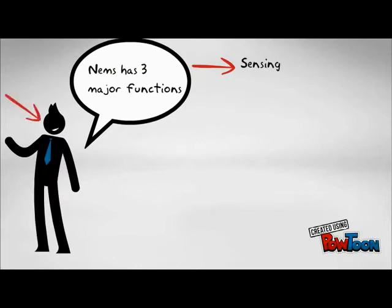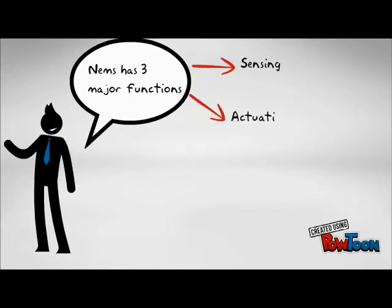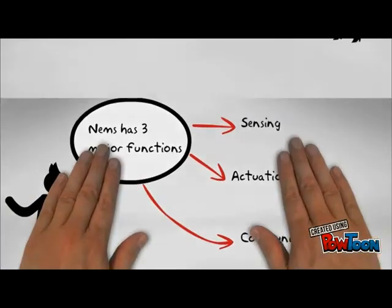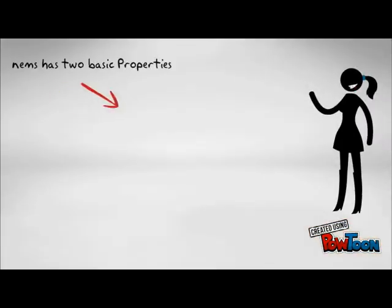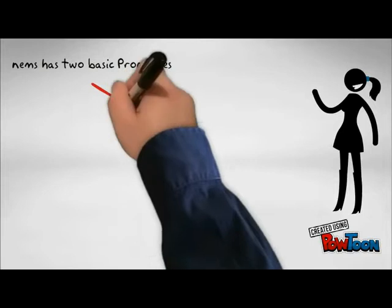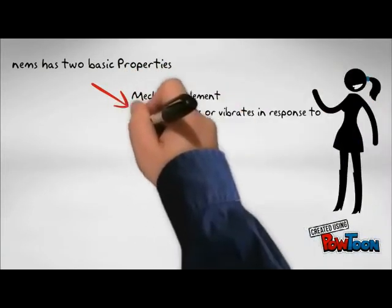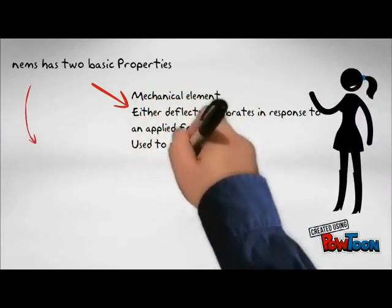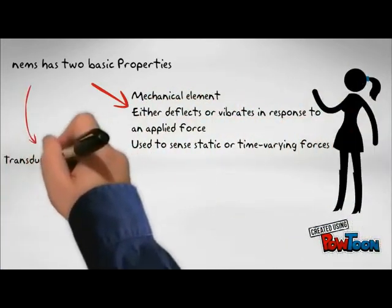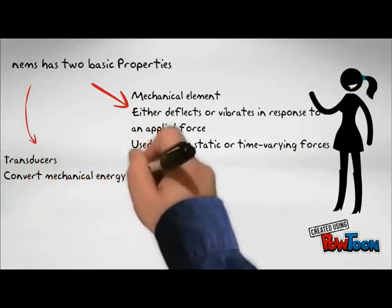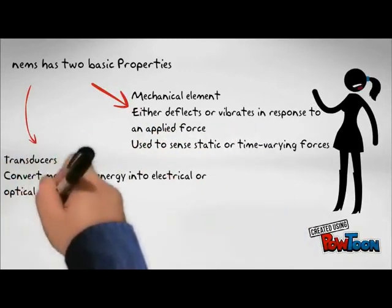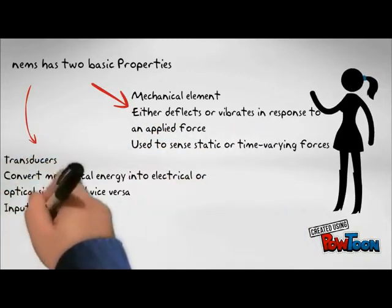NEMS has three major functions: sensing, actuation, and communication. NEMS has two basic properties: a mechanical element that either deflects or vibrates in response to an applied force, and a transducer which converts mechanical energy into electrical or optical signals and vice versa.